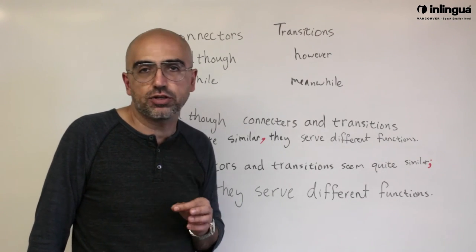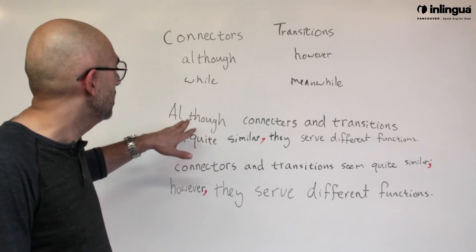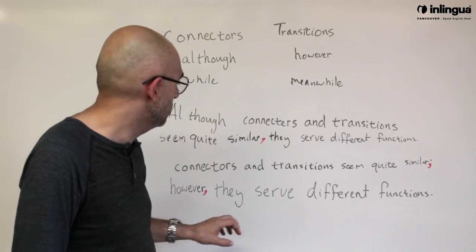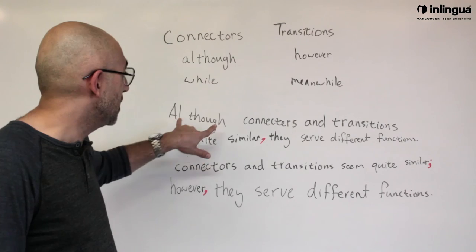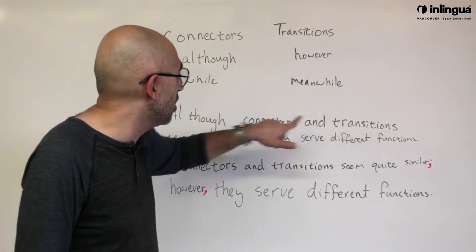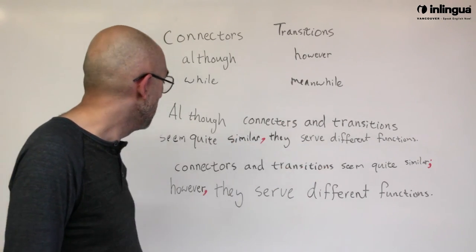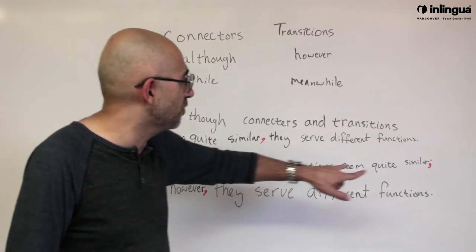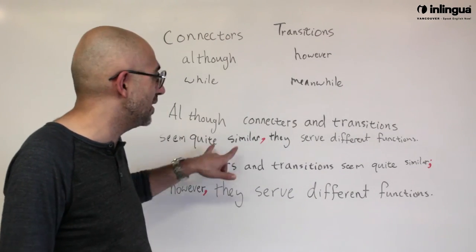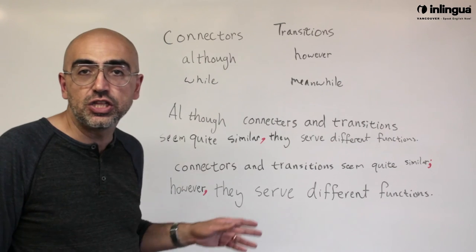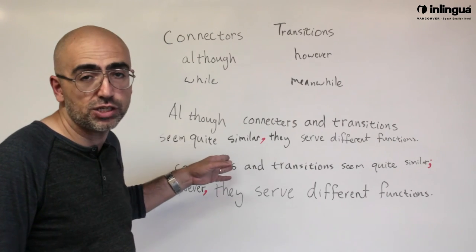And that is a very technical difference. The only difference is one is connecting these two. This one is connecting these two. Because although it goes at the beginning, it makes this clause dependent on the following. Because this is almost separated from both of them, they're both independent, but however, nicely transitions from one to the other.